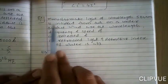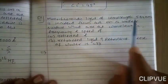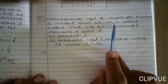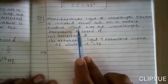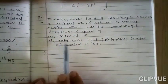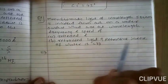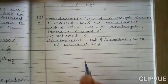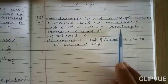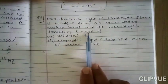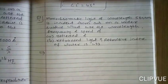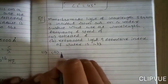Example number 1. Monochromatic light of wavelength 589 nanometers is incident from air on a water surface. What are the wavelength, frequency, and speed of the reflected and refracted light? The refractive index of water is 1.33. We have to calculate wavelength, frequency, and speed for both reflected and refracted light. First, we calculate for reflected light.